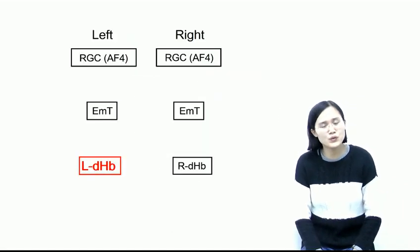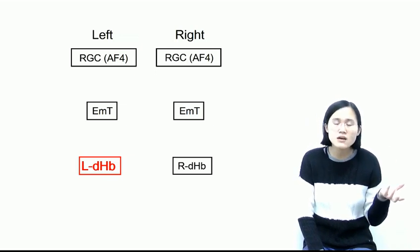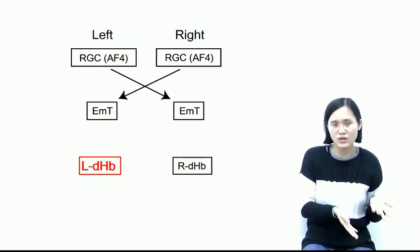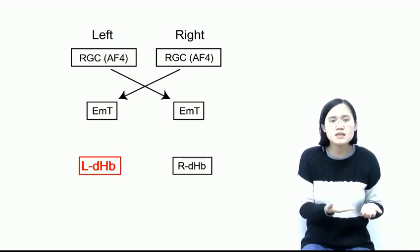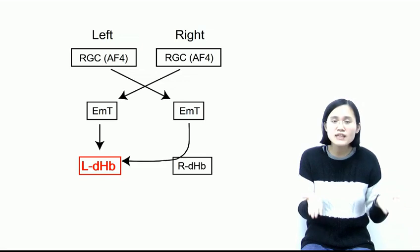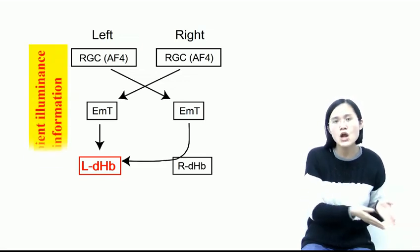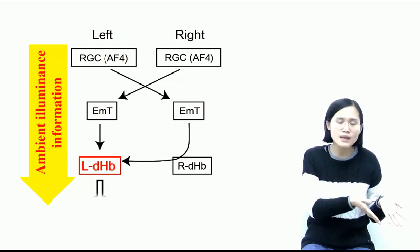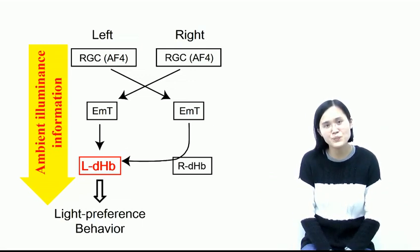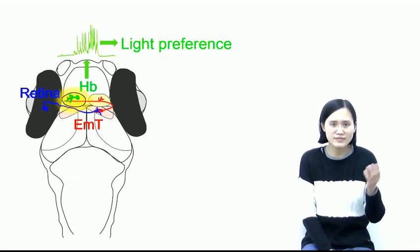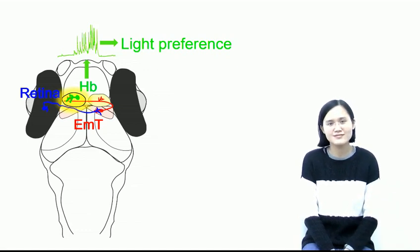To conclude, our study showed that a subset of sustained firing RGCs project to contralateral EMT through the arborization field region, transmitting the ambient illuminance information to the EMT. Then, bilateral EMT preferentially innervated the left dorsal habenula, relaying the illuminance information asymmetrically to the left dorsal habenula to trigger the light-preference behavior. Thus, our study reveals a novel function of habenula and elucidates the neural circuit mechanism of light-preference behavior.